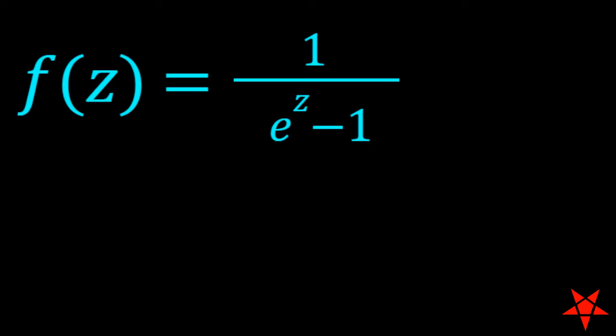So our first example is going to be f of z equal to 1 over e to the z minus 1 for a residue located at z0 equal to 0. We already calculated this residue in Part B of the previous episode, so I'm not going to go into detail here on the process of obtaining it. We know that it's equal to 1.